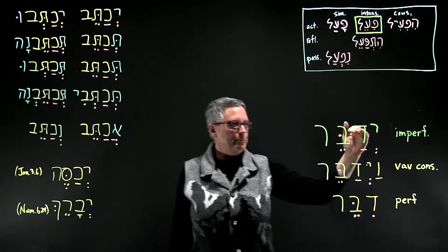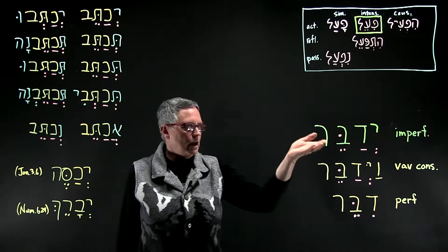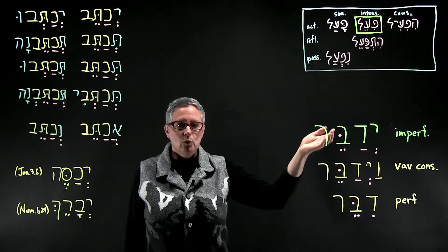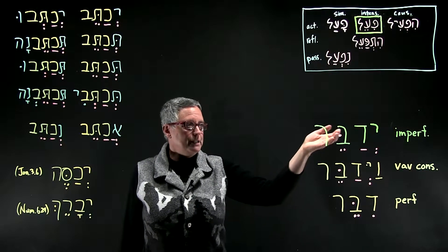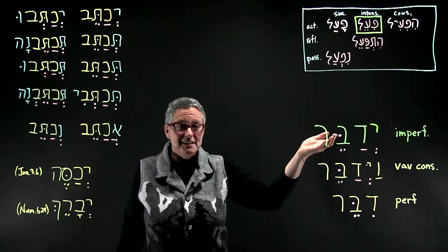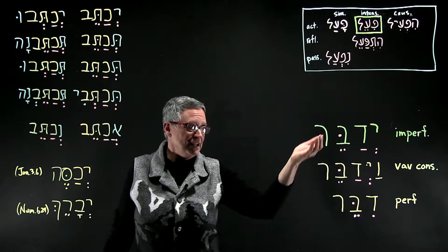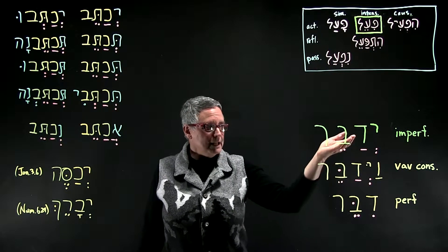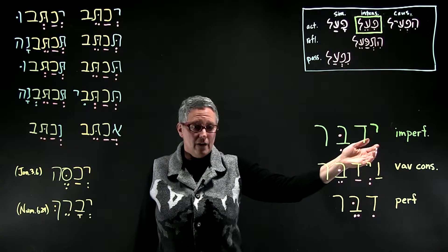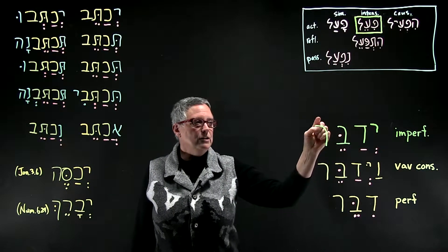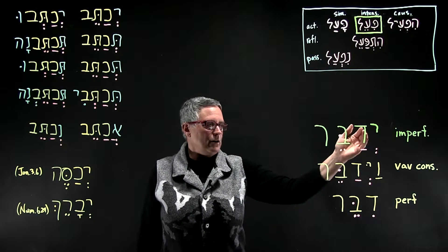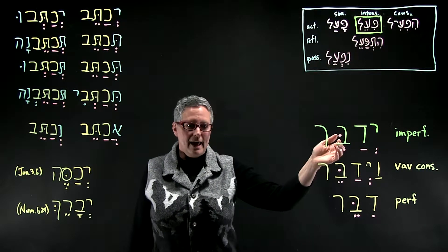Here's an example: yiddeber, which translated would be 'he will speak.' Deber, perhaps because speaking is an intensive activity. You can see here what the visual signs are: you get the shva under the prefix, and you get the dagesh in the middle root letter — the dimerol. The vocal pattern is e, a, e.